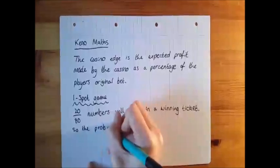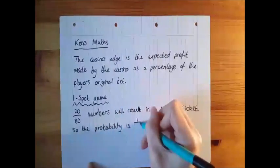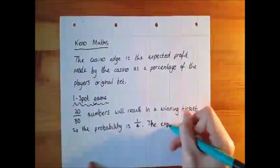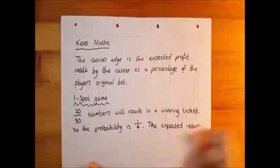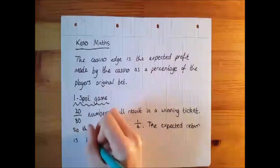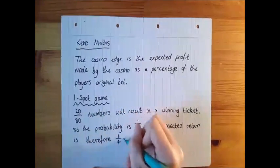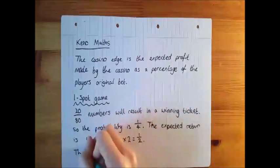Using the table from the previous video, the returns for winning a one-spot game is $2, so the expected return is a quarter times 2, which is equal to 50%. The casino will therefore have a 50% edge at this payout.